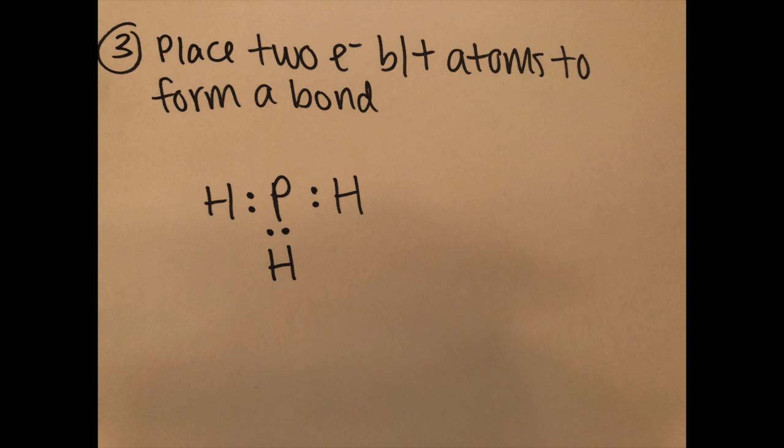And so then step three we're going to put the electrons in between the atoms to form a single covalent bond. So we're going to place two in between hydrogen and phosphorus three times.